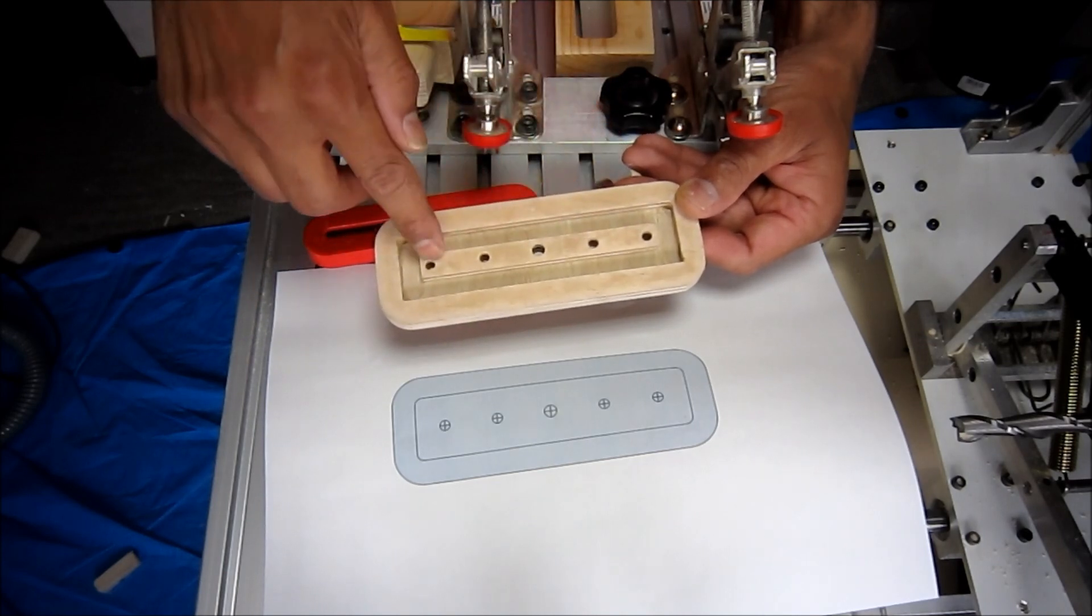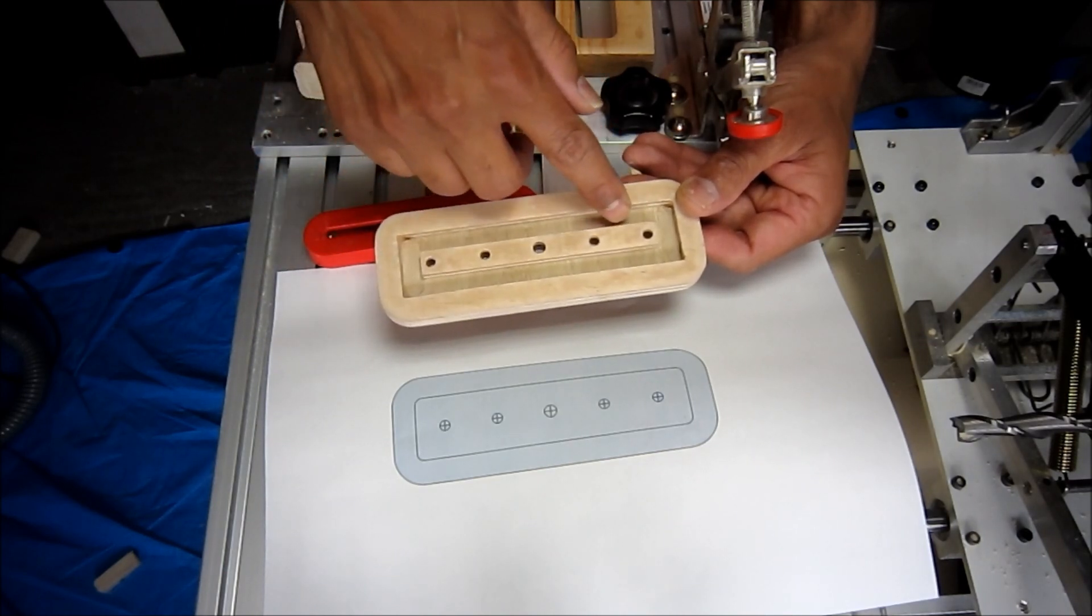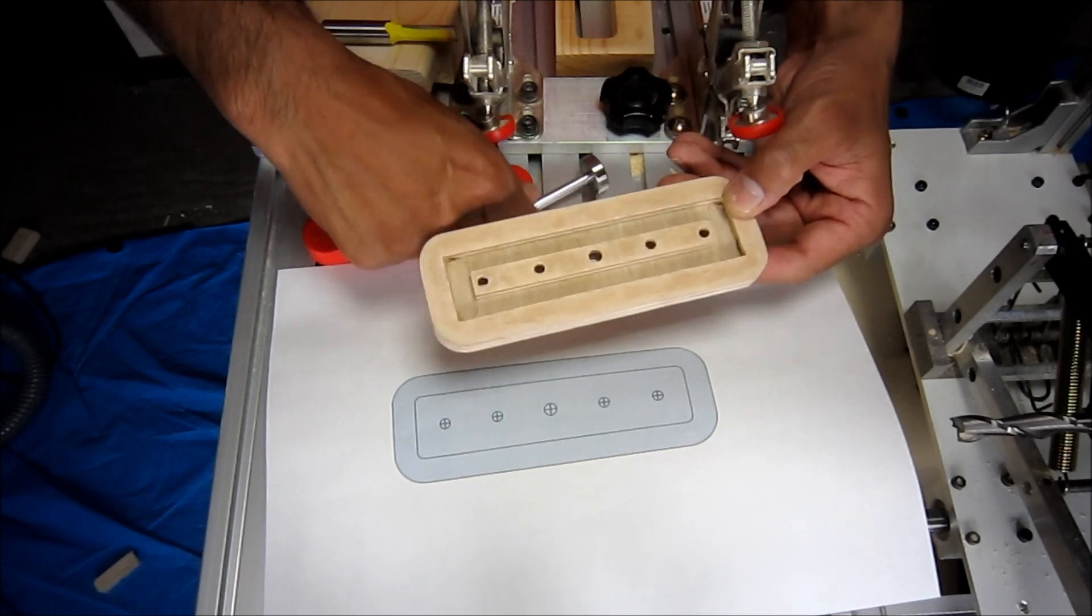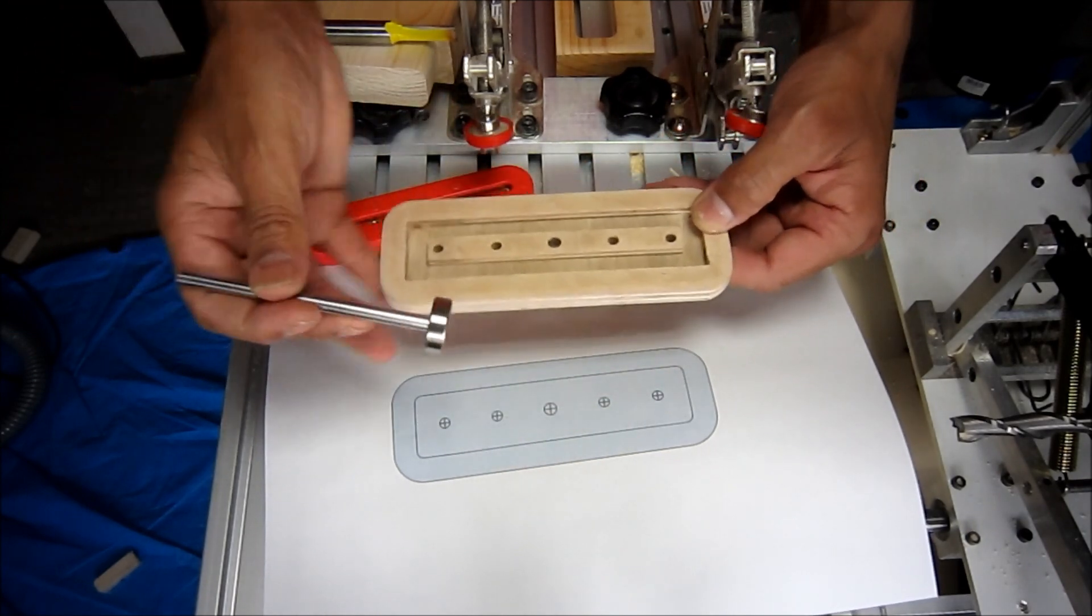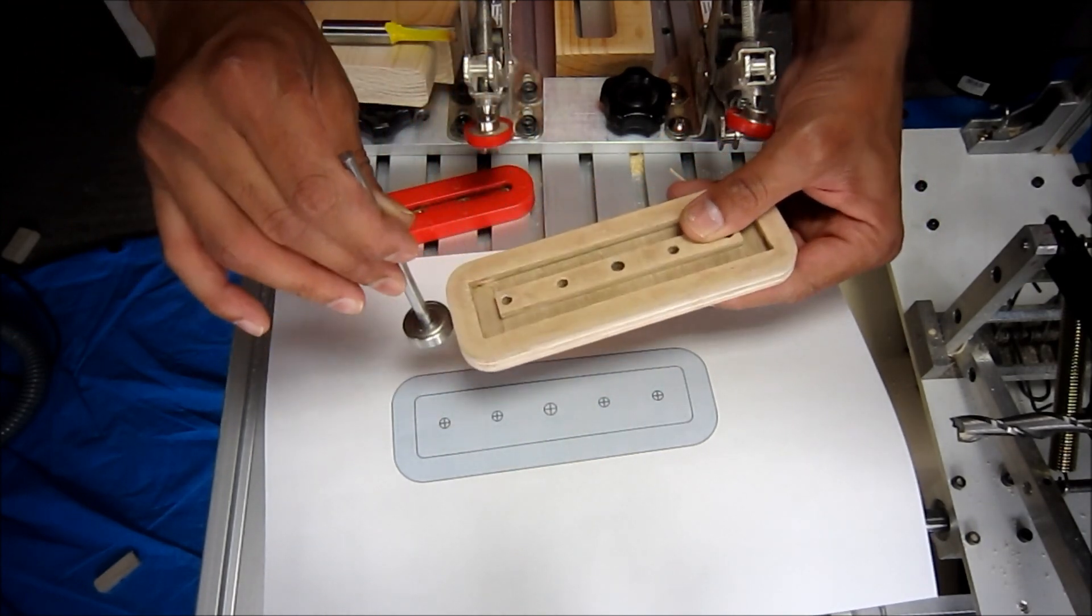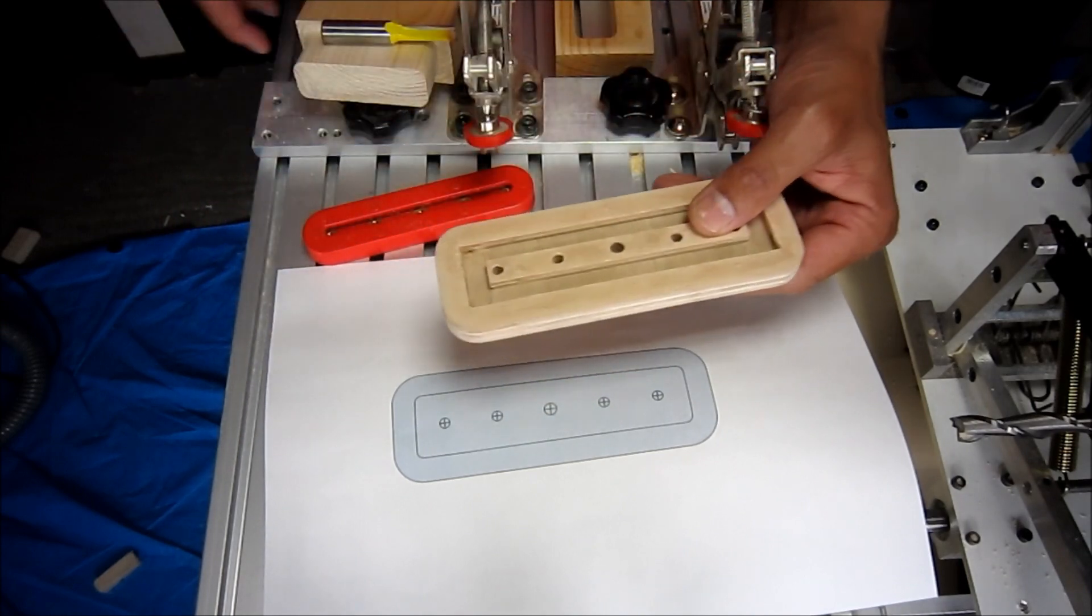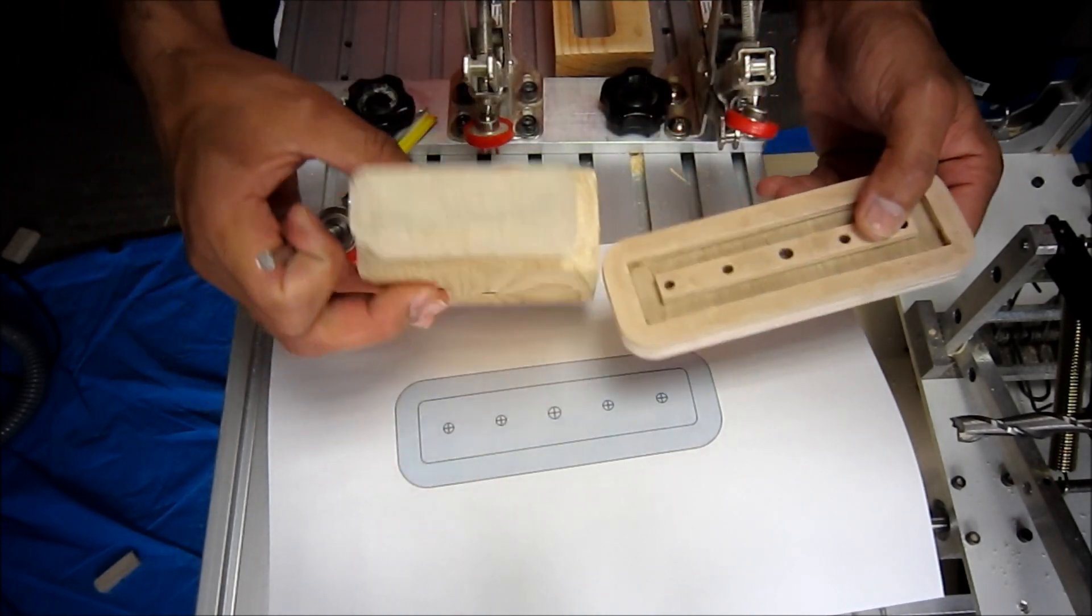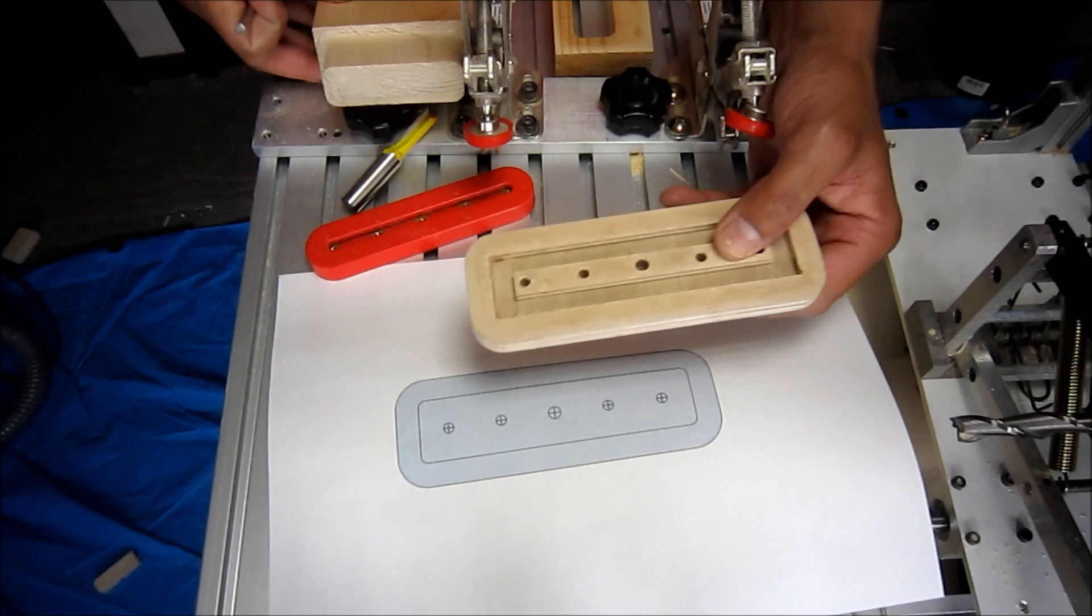These are all 5mm holes, and then I tapped 6mm here. When I want to make the tenon, I'll simply bring my guide bearing upside and then I can have a perfectly nice tenon.